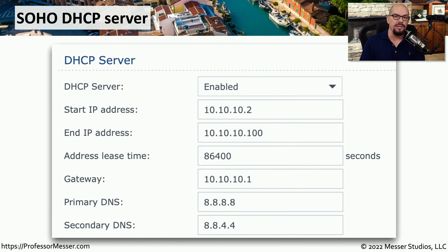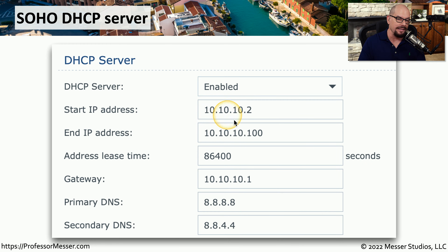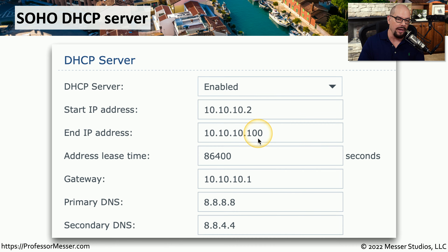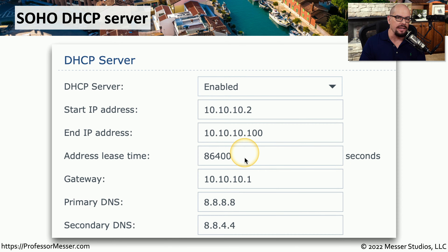If you're using DHCP at home or in a small office, your DHCP server may not be on a Windows device — it may be on an embedded router. This is the web front end to an embedded router that shows that the DHCP server is enabled. The start address on this network is 10.10.10.2 and the end address is 10.10.10.100, so we can expect this DHCP server to assign addresses from .2 all the way up to .100. This DHCP server specifies the address lease time in seconds, which is a bit unusual, but 86,400 seconds is the same as 24 hours, so this configuration works just fine.